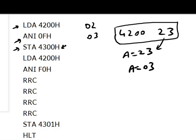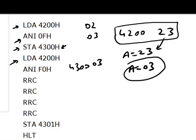With STA 4300, the data in register A — which is 03 — gets stored in memory location 4300, the lower byte location. Then LDA 4200 again loads 23 back into register A. Next, ANI F0 masks with F0 to isolate the upper digit.